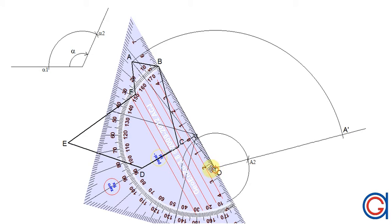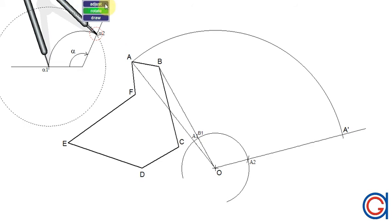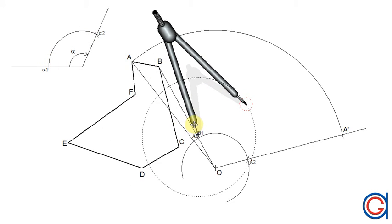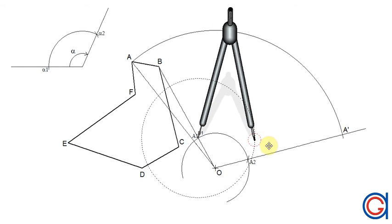To continue, we have to repeat the same process with all the vertices of the shape. So now we join points B and O, obtaining B1. The next step, we are going to transport the length alpha 1 to alpha 2 onto the large arc from point B1. Setting the compass on point B1 and scribing an arc to the right, we obtain B2.